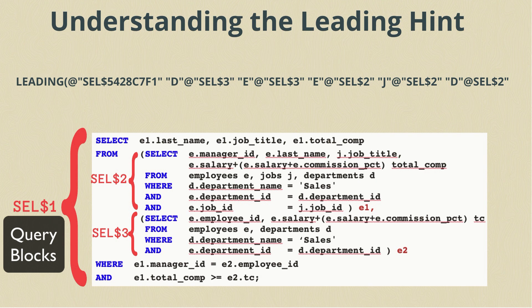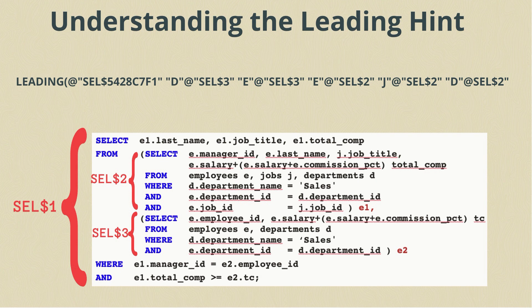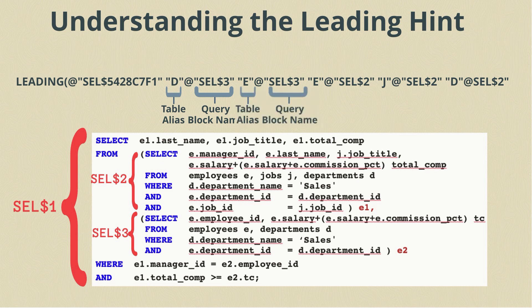At first glance the leading hint looks a little complicated, but it's actually quite easy to read once you get the hang of it. The leading hint displays the join order as an ordered list of table aliases and query block names. The aliases appear in the order in which we access those tables inside the query. The leading hint here is for a SQL statement that contains three query blocks: SEL$1 for the outer query, SEL$2 for the second subquery with alias E2. The first table in the join order is the department table with alias D from the second subquery SEL$3, which is then joined to the employees table with alias E from that same subquery, and so on.